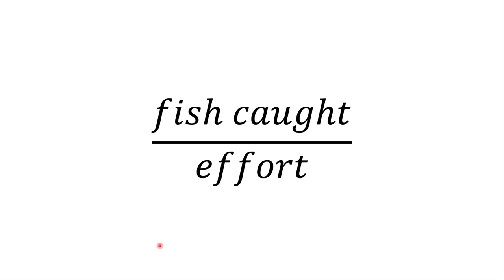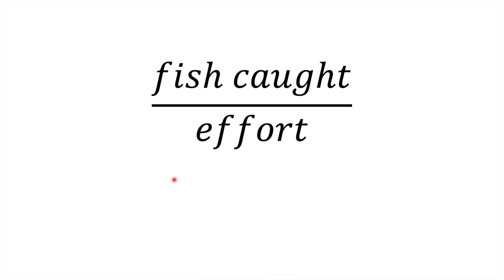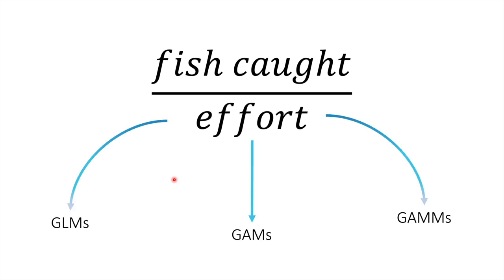In its simplest form, catch per unit effort is simply the amount of fish caught divided by some unit of effort. Depending on the characteristics of the fishery and the available data, this index may also be standardised by the inclusion of fish length or age, or expanded into a more complex model.